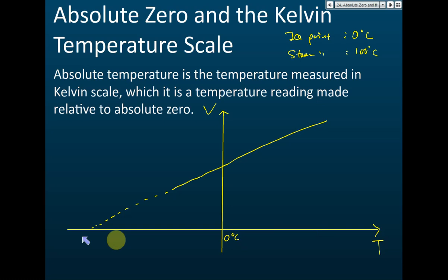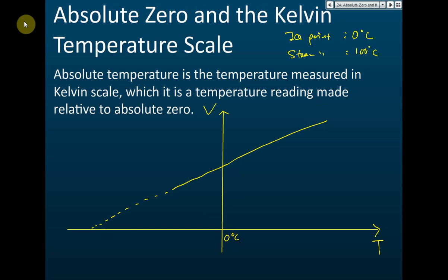But if we extend the line on the graph until it touches the x-axis, the volume becomes zero. Maybe the volume starts at 200, then 100, and at this point the volume is zero. When the volume of the gas becomes zero, the particles do not move — they stick together and occupy no space. We find that the temperature at this point is negative 273 degrees Celsius — actually negative 273.16, but we assume negative 273.